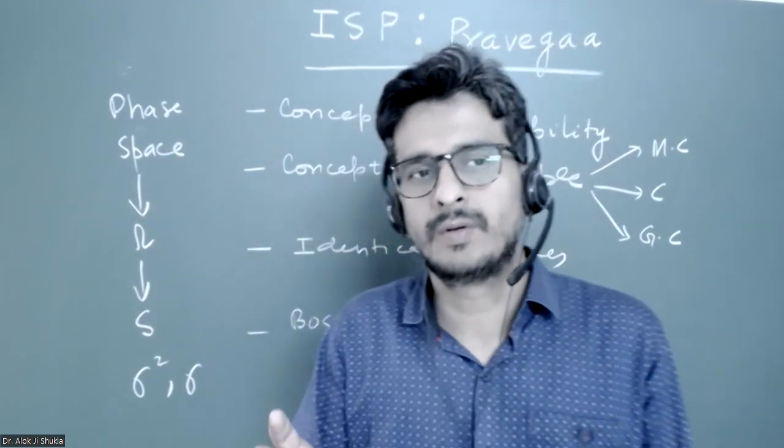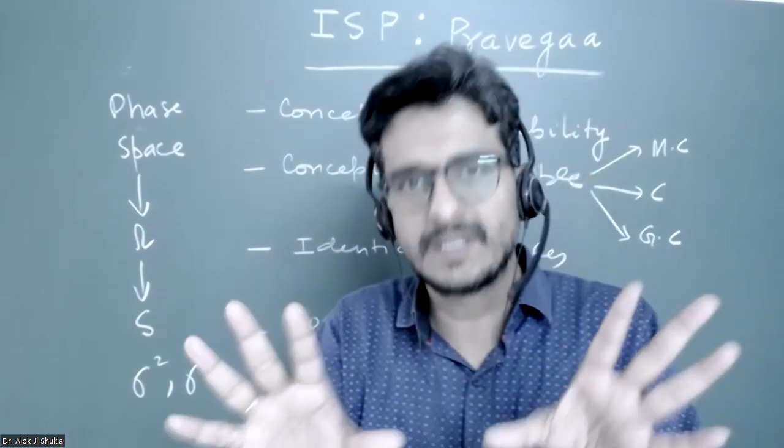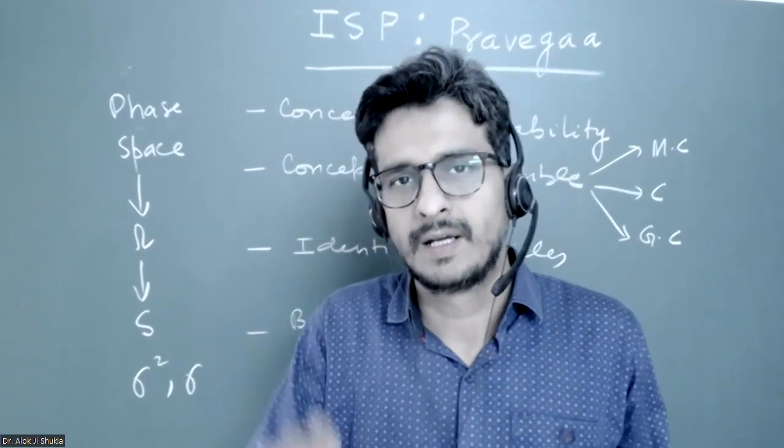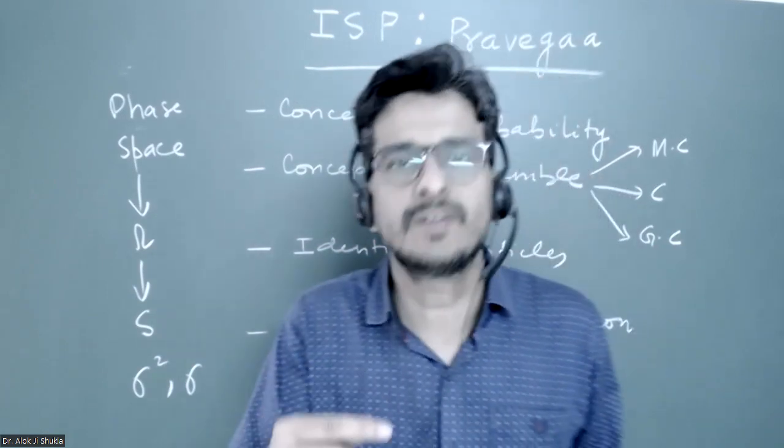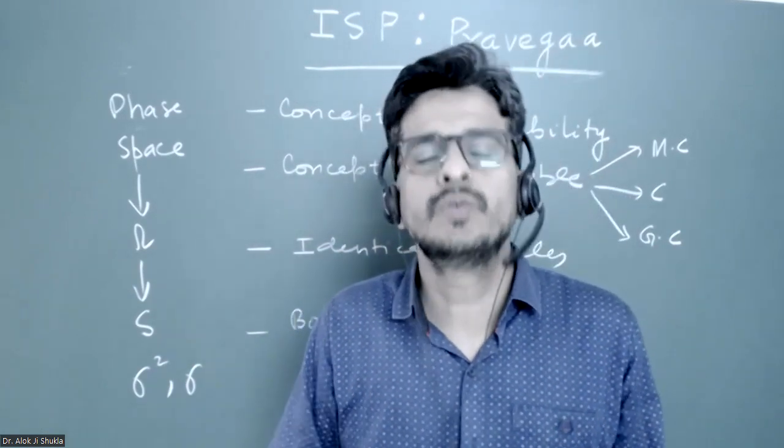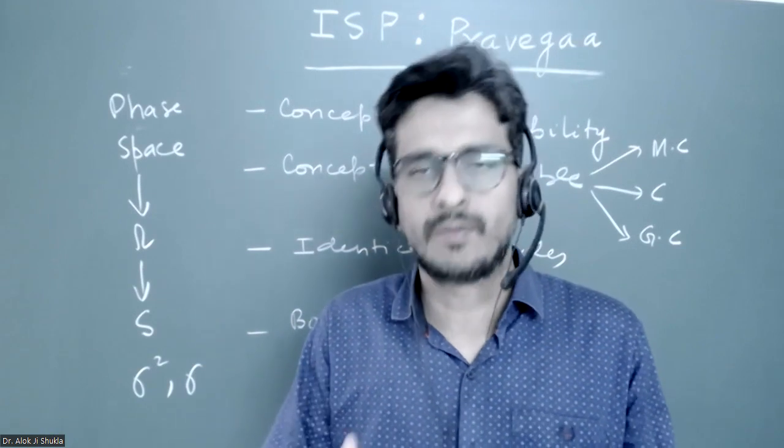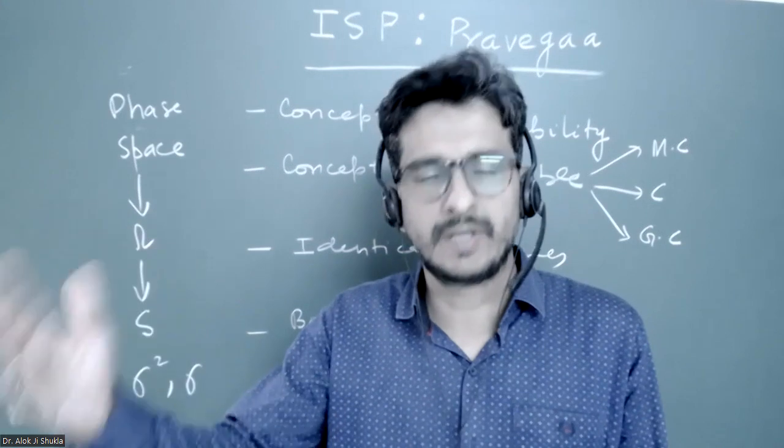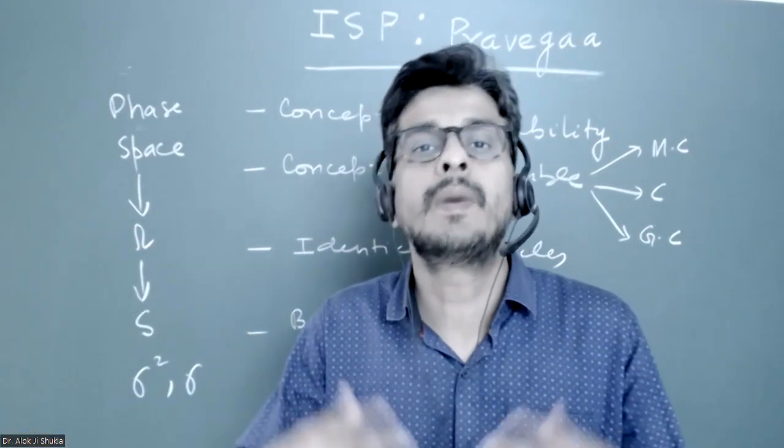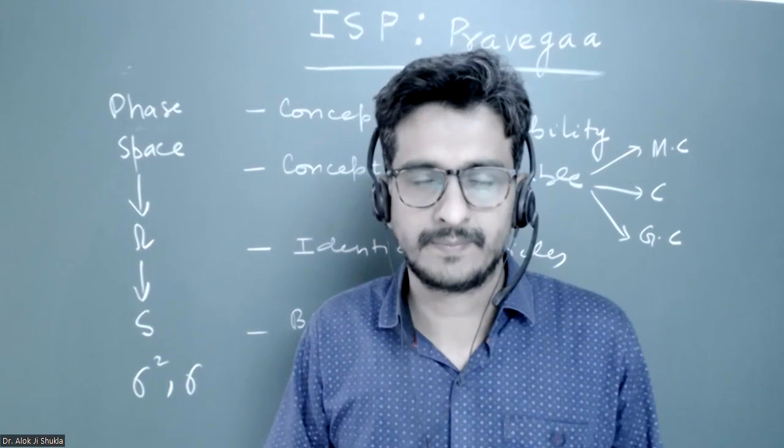So how a phase space, which is a mathematical construct, a point on the phase space gives you a state of the system and how using phase volume or depending on the dimensions 1D, 2D, 3D, you calculate number of states which is available to the system.